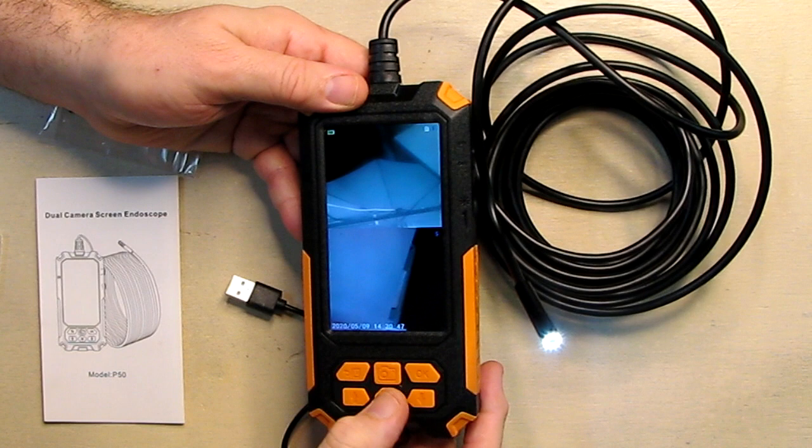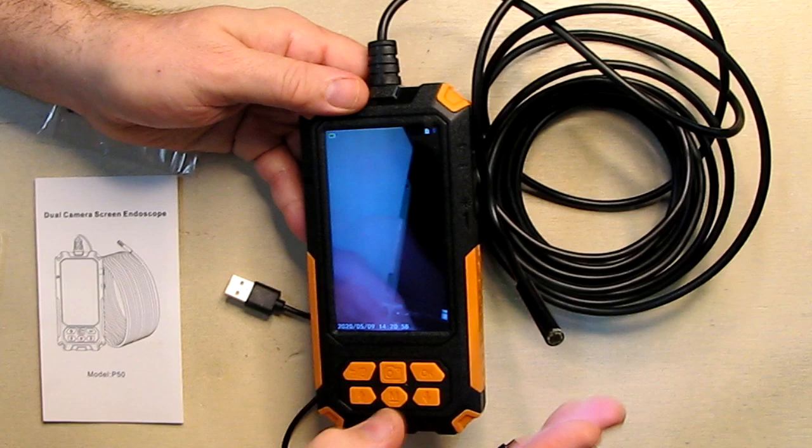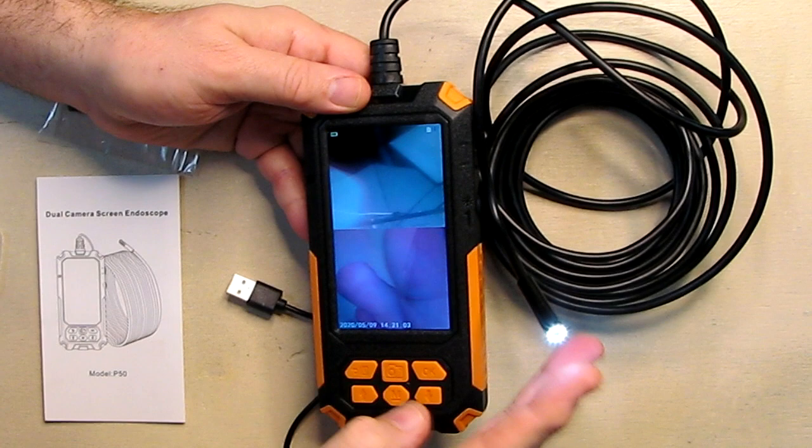If you want to change the modes of the camera, you hit the M button and it allows you to go to the different modes. So there, it just changed to the front camera. I'm gonna hit the mode button again and now it changed to the side camera. I'm gonna hit it again and now it went to both cameras together. That's how that works.